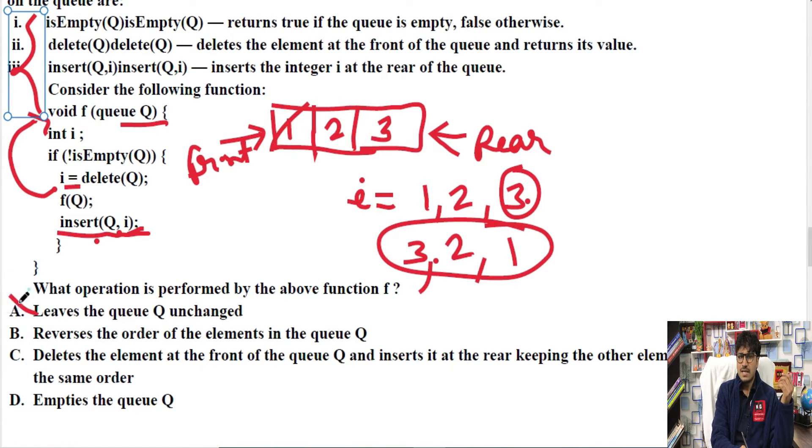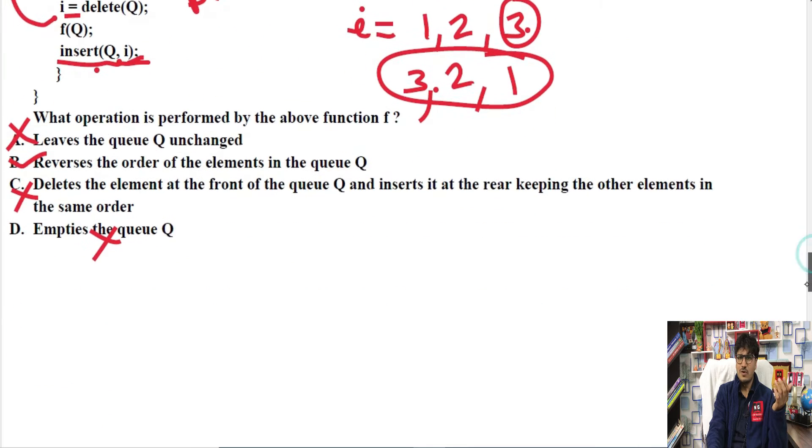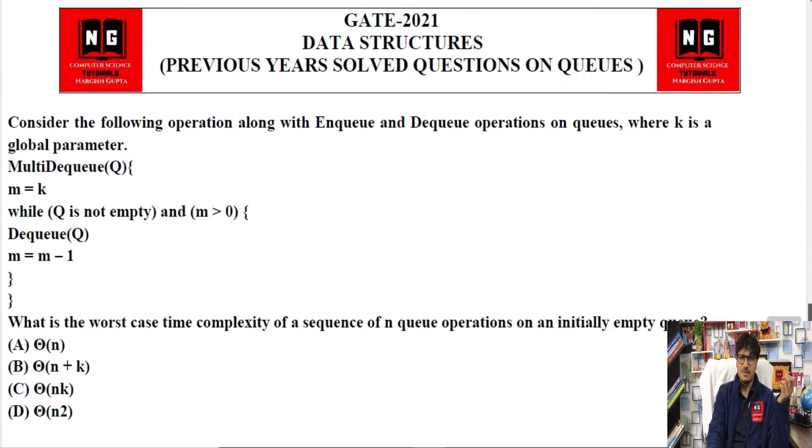So leaves the queue Q unchanged - no, that's not it. Reverses the order of the elements in the queue - yes, we're getting elements in reverse order. Deletes the element at front of the queue and inserts it at the rear keeping other elements - that's also wrong. Empties the queue - that's also wrong. So B is the option. Option two is correct. What was in order is now in reverse. But I'm saying again, in these types of questions, you shouldn't think with respect to programming languages like C, C++. Here you just have to think with respect to logic.